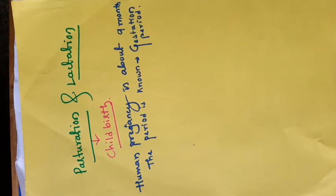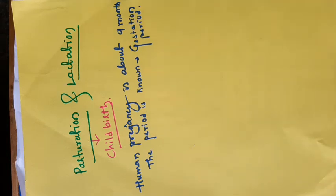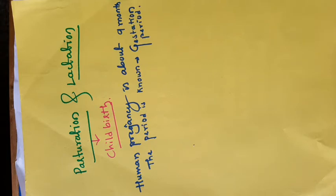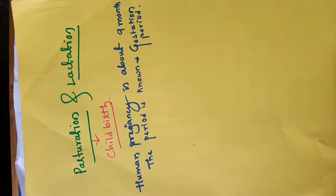How does parturition occur? It is a very important and interesting mechanism. We are talking about natural or normal delivery. During parturition, vigorous contraction of the uterus occurs. At the end of delivery of the fetus, we can see the vigorous contraction of the uterus. This contraction is initiated by the fetus only — parturition is induced by an endocrine mechanism, specifically a neuroendocrine mechanism.